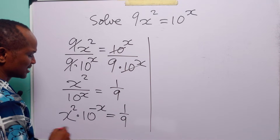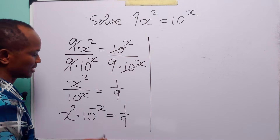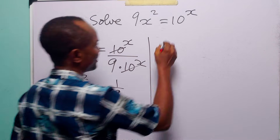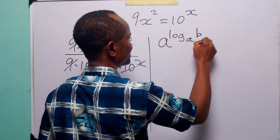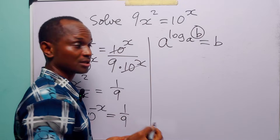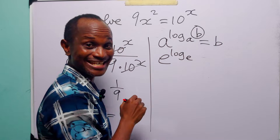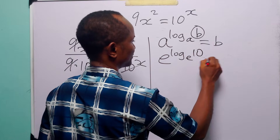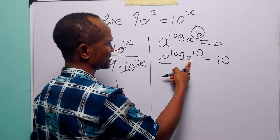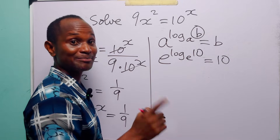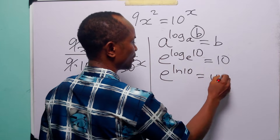The next thing we are going to do is write 10 in terms of the Euler number e. From our logarithm rules, remember that a to the power log base a of b is equal to b. So we have that e to the power log base a of 10 must be equal to 10. Since log base e is the natural log ln, we have that e to the power ln 10 is equal to 10.